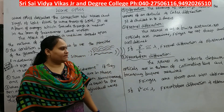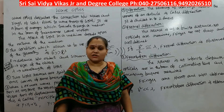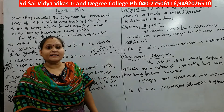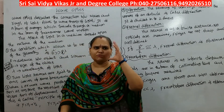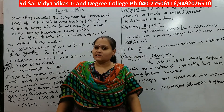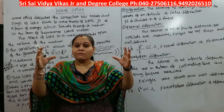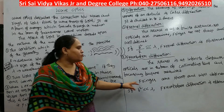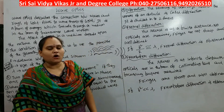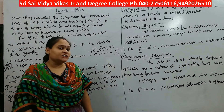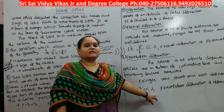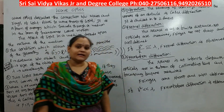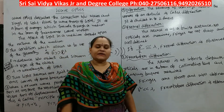In Fraunhofer diffraction, the source is at an infinite distance. Optics are used in the form of a collimating lens and a focusing lens, allowing the observer to control the formation of the image. The fringes are sharp and well defined. The condition for Fraunhofer diffraction is b² << lλ.